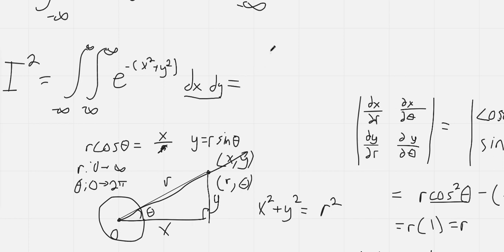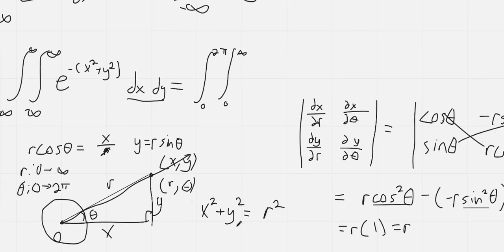Then we can rewrite this. We get 0 to 2 pi for theta, and then r goes from 0 to infinity. And then here, x squared plus y squared equals r squared. That is what motivates us to do the substitution because we get a nice expression here. We get e to the negative r squared. And here we get dr d theta times r. So r dr d theta.